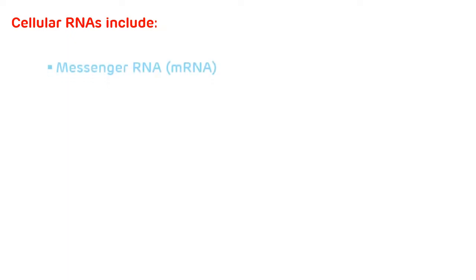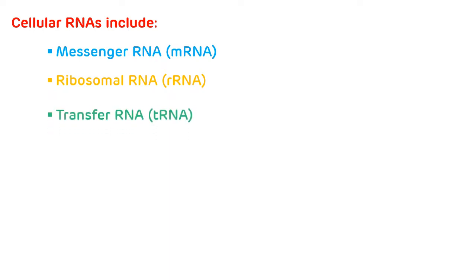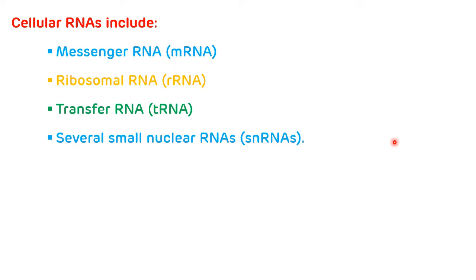Cellular RNA contains four types of RNA: messenger RNA, ribosomal RNA, transfer RNA, and small nuclear RNA. Messenger RNA, ribosomal RNA, and transfer RNA are involved in translation or protein synthesis, while small nuclear RNA is involved in mRNA splicing.